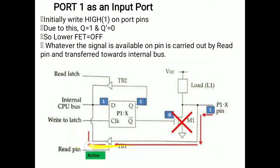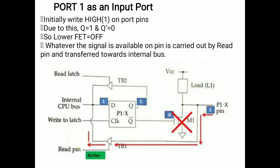The signal moves in this direction, and the upper side VCC has more power compared to the signal available at P1.0. That is why the signal at P1.0 — either 0 or 1 — will simply follow the path of the read buffer where it is activated, then move towards the internal bus and through the internal bus move towards the CPU. This path is followed when Port 1 is used as an input: initially make the internal bus high, which generates Q=1 and Q bar=0, turning off the lower FET, and the signal follows the low resistance path via the activated read buffer.